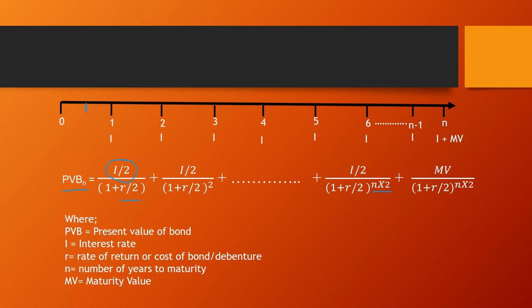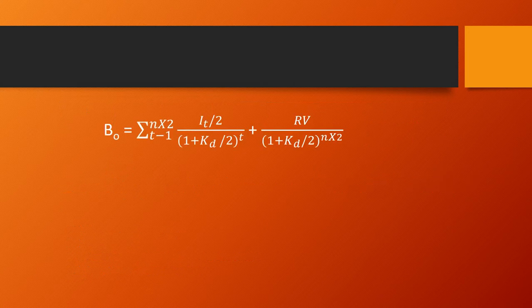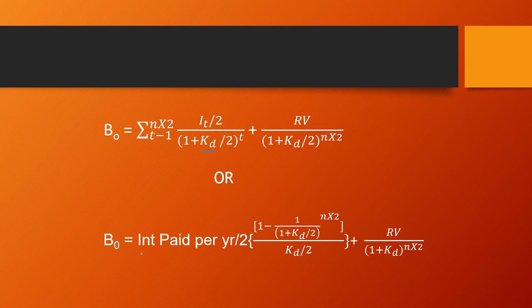Here PVB is the present value of the bond, I is the interest per annum, R or KD is the rate of return or cost of the bond per annum — divided by two for semi-annual calculations. N is the number of years to maturity — multiplied by two — and MV is the maturity value. For the shortcut method we use the present value of ordinary annuity formula for the interest component, and the standard present value formula for the maturity value.